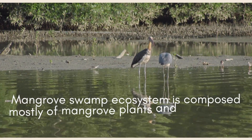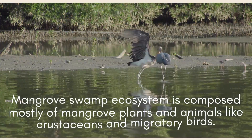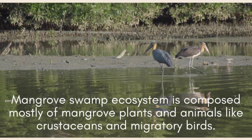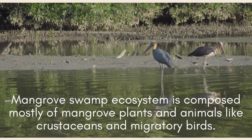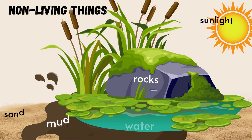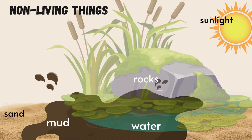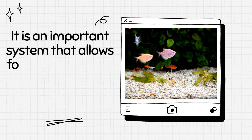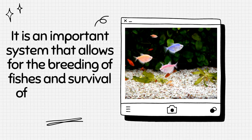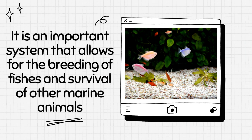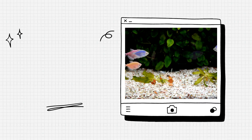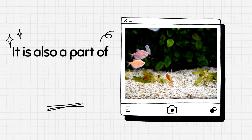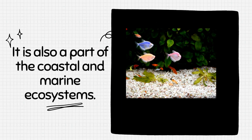Mangrove swamp ecosystem is composed mostly of mangrove plants and animals like crustaceans and migratory birds. The non-living part is composed of water, sand, mud, rocks, and sunlight. It is an important system that allows for the breeding of fishes and survival of other marine animals. It is also a part of the coastal and marine ecosystems.